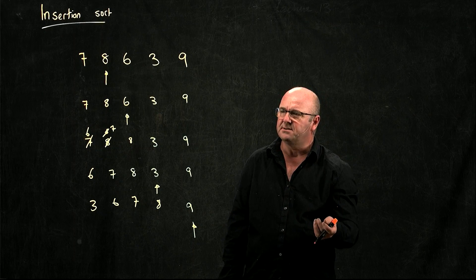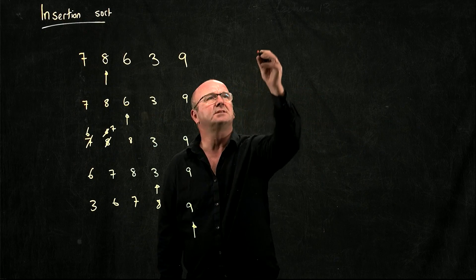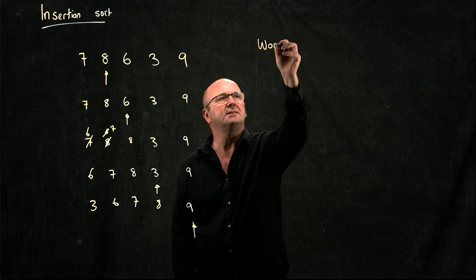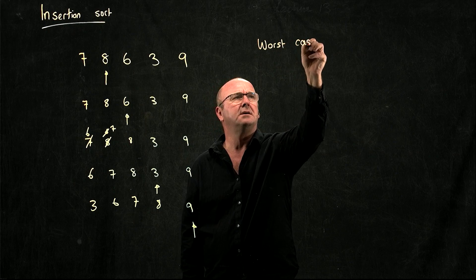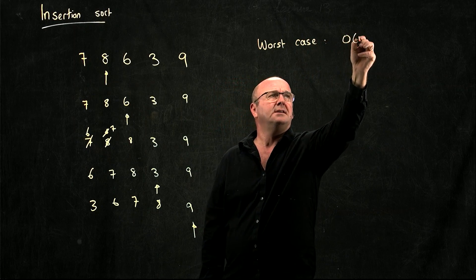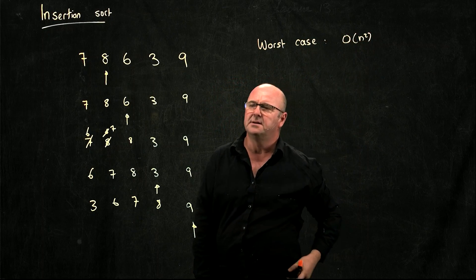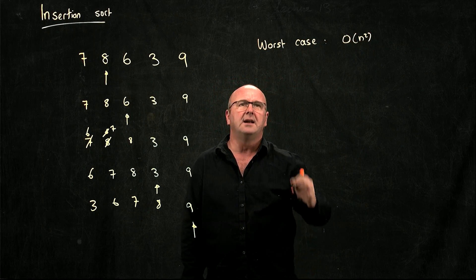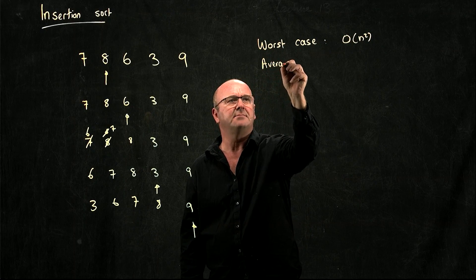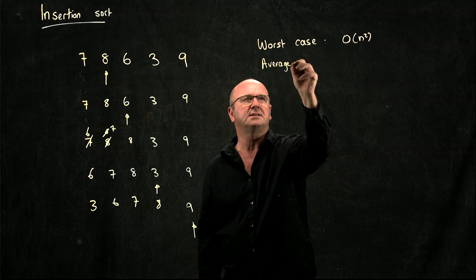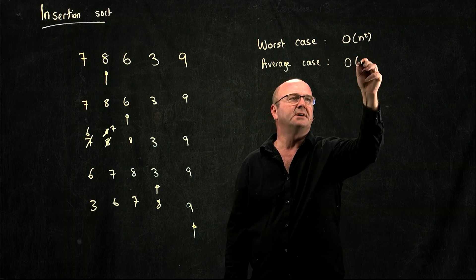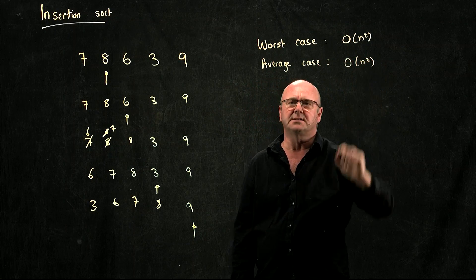So it's big O of n squared. A selection sort in the worst case is big O of n squared, and in the average case — which is if we just have a randomly sorted list — it's big O of n squared.